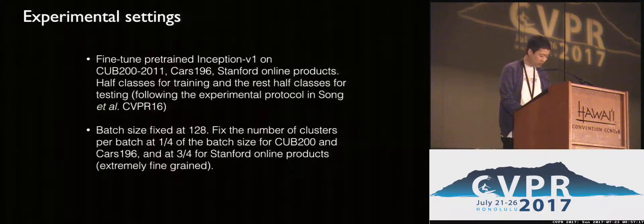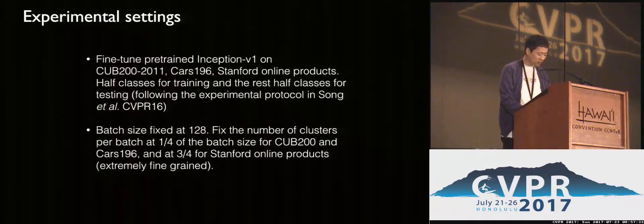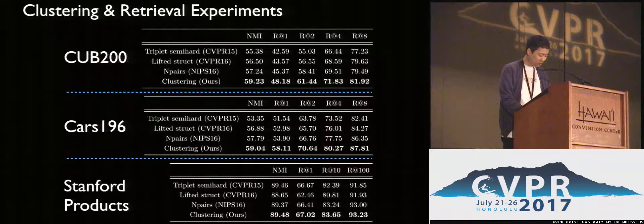For experiments, we fine-tuned Inception V1 on CUB, CARS, and Stanford online product datasets, following the protocol in Song et al. CBR16. We set the batch size at 128 and fixed the number of clusters per batch at one-fourth of the batch size for CUB and CARS, and three-fourths for the products dataset. We observed state-of-the-art performance on all datasets in clustering and retrieval tasks, measured in NMI and Recall-at-K evaluation metrics.